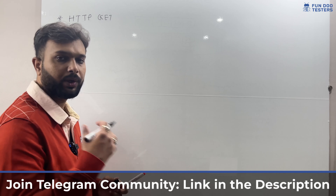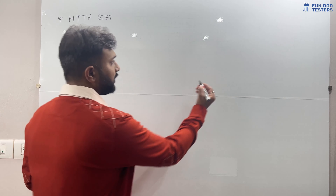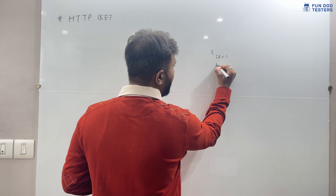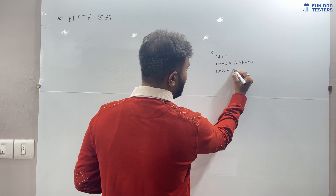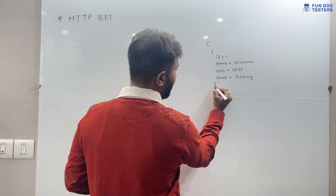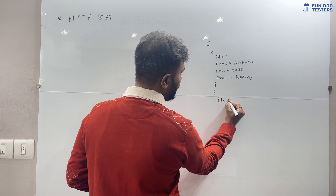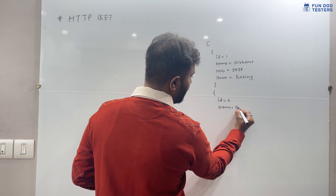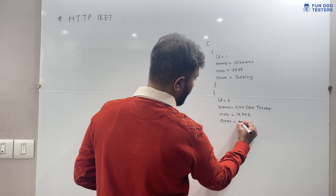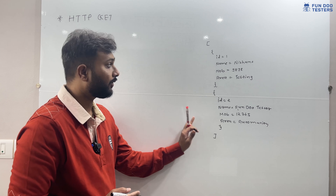Let's understand via an example. Say I am using a student application and I want to store some student data. Student one data: id=1, name=Nisant, mobile number=9898, area=testing. Student two data: id=2, name=Fundu Tester, mobile number=12345, area=automation. This is the JSON data stored on a server, and now I want to retrieve some information from it.